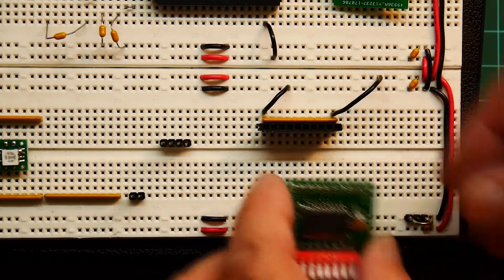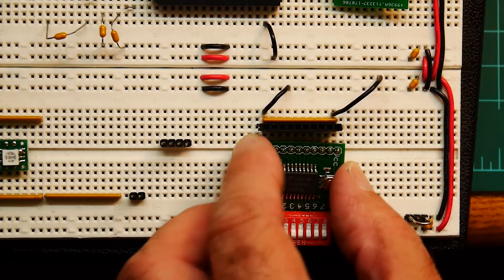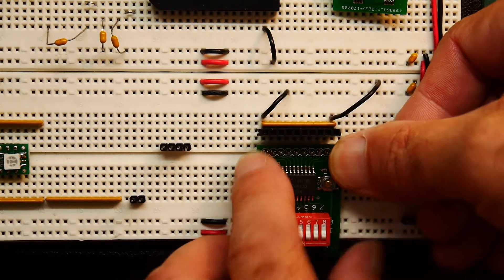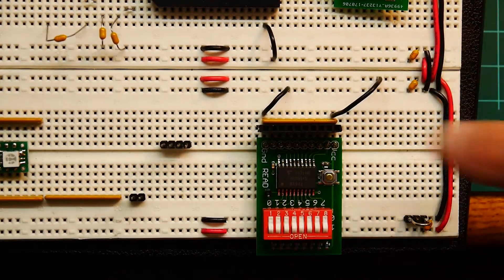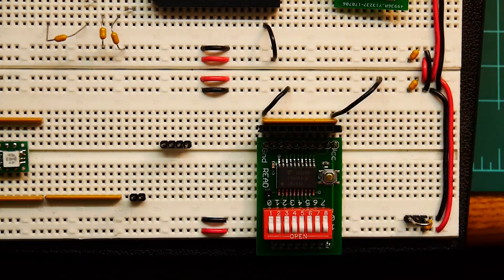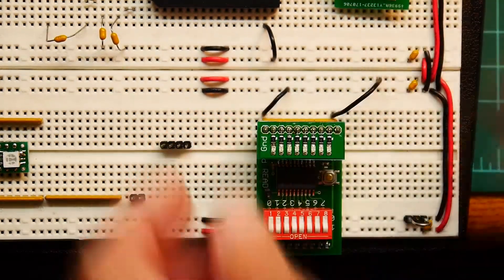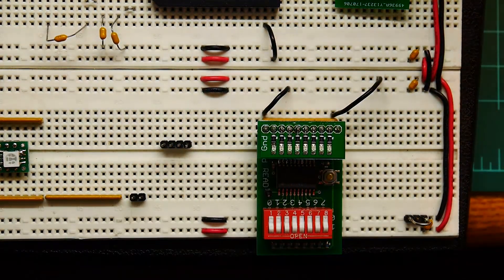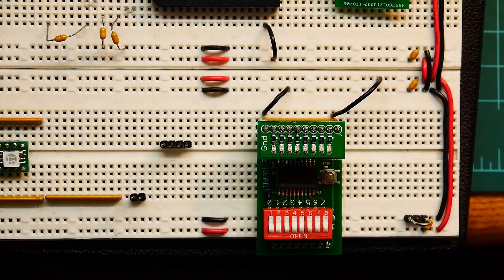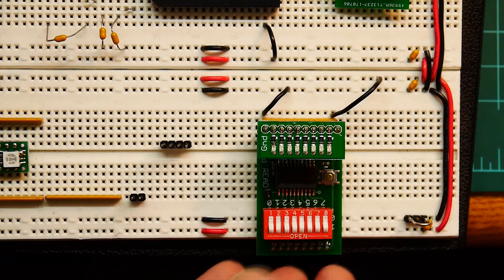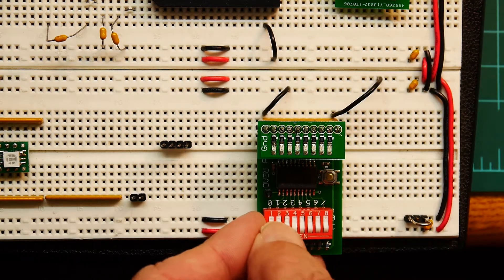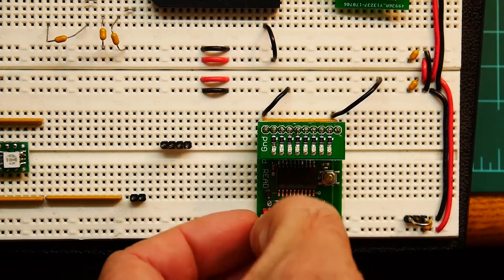So we'll put that on here, make sure it's lined up right. Okay, we can put an indicator up here to look at the bus. Turn this on, so there's nothing on the bus.